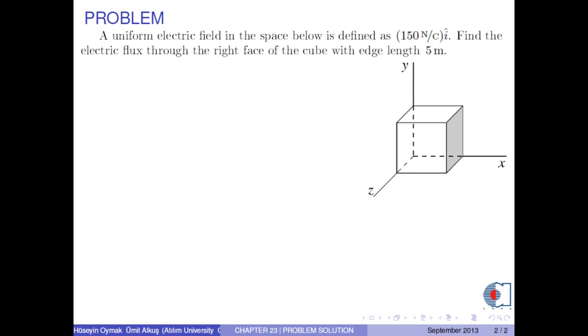A uniform electric field in the space below is defined as 150 N per Coulomb ŷ hat. Find the electric flux through the right face of the cube with edge length 5 meters.